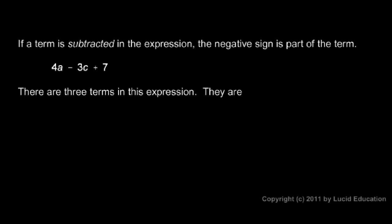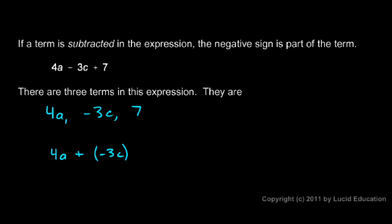Remember that if a term is subtracted in the expression, the negative sign is part of the term. So in 4a minus 3c plus 7, that minus sign is part of the term negative 3c. There are three terms in this expression: 4a, negative 3c, and 7. Understanding that the negative sign is part of the middle term is crucial. Sometimes it's helpful to think of all of the terms as being added — so instead of 4a minus 3c plus 7, think of it as 4a plus negative 3c plus 7. If you think of it that way, the sign of each term, positive or negative, becomes clear.